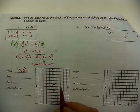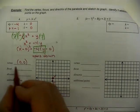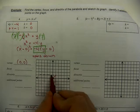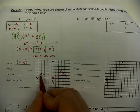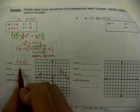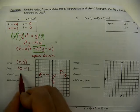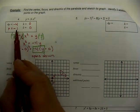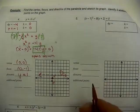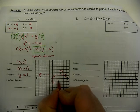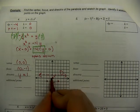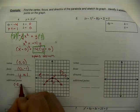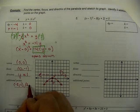The directrix is the same distance P on the other side — one unit above the vertex — going horizontally. Label it D. The focus is at (0, −1). The directrix equation is y = 1. For the two additional points, we take P = 1, double it to get 2, and go two units on either side of the focus. Those additional points are (−2, −1) and (2, −1).